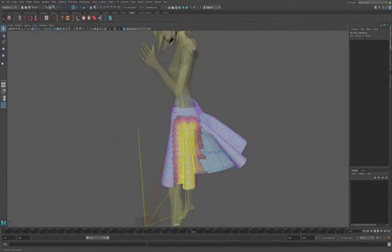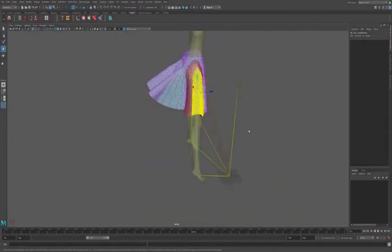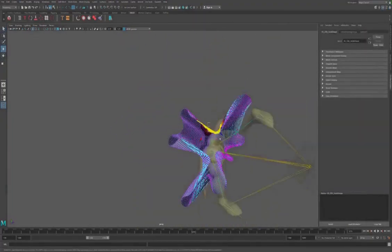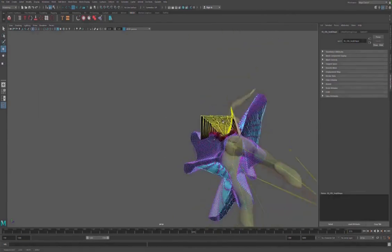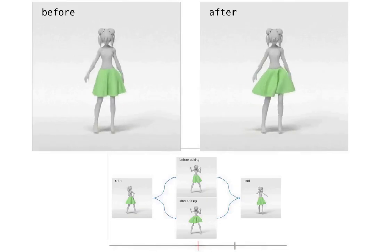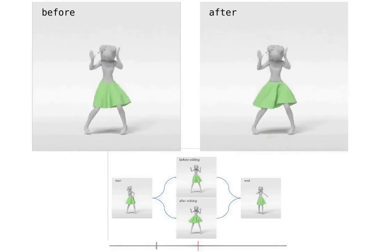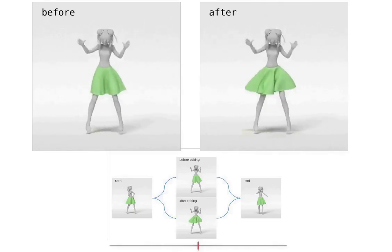Here we show another example. In this case, the mesh editing creates a lot of artifacts on the garment shape, so the edited mesh is far from what we have in the training dataset. Our approach captures the trend of this editing but has some artifacts such as self-intersection when projecting it back to the 3D shape space.